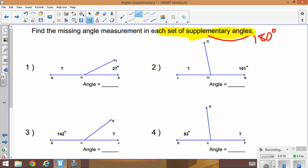So in number one, I know we have this angle TRS that measures 27 degrees. So to find QRT, I'm going to take 180 and minus 27. So 10 minus 7 is 3, 7 minus 2 is 5. So this missing angle is 153 degrees.